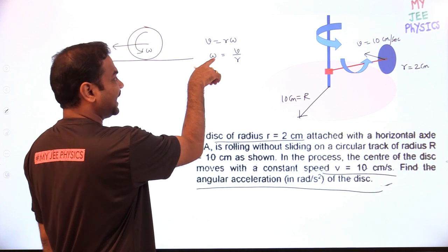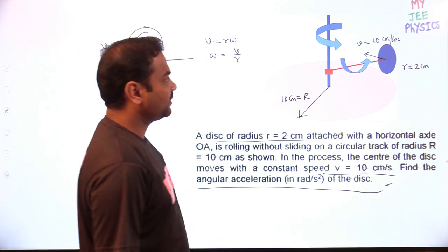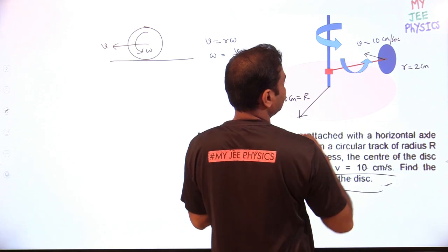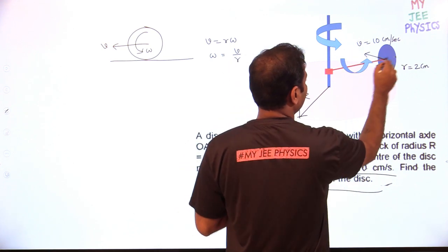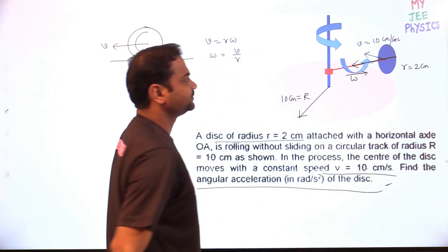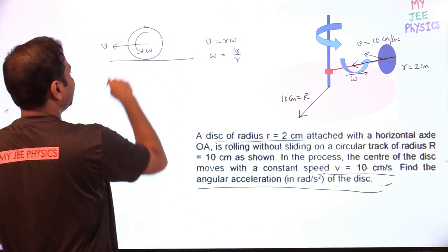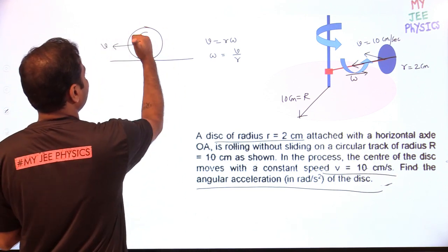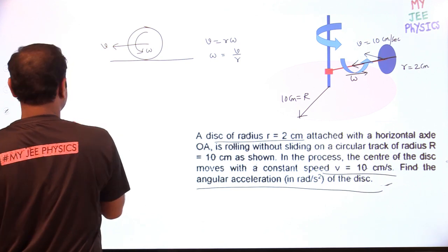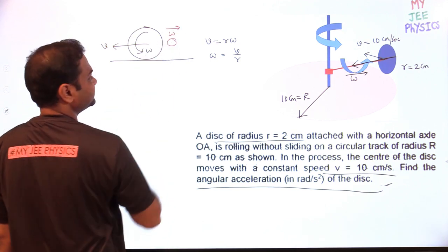This omega of 5 rad/s is the magnitude. But what about the direction? Using the right-hand rule — curl your fingers in the sense of rotation — the omega direction comes out of the board. So the direction of omega bar is out of the board.